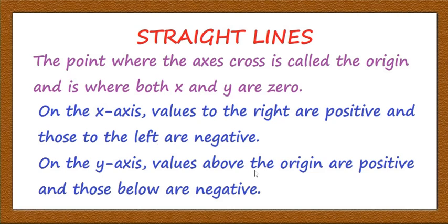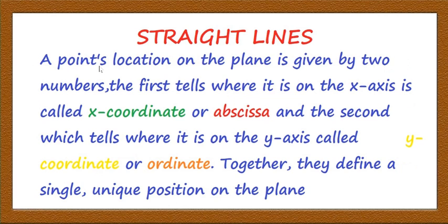On the x-axis, values to the right of the origin are positive and those to the left are negative. Similarly, on the y-axis, values above the origin are positive and those below are negative. A point's location on the plane is given by two numbers: the first number tells where it is on the x-axis and is called the x-coordinate or abscissa, and the second number tells where it is on the y-axis and is called the y-coordinate or ordinate. Any point on the plane will have an ordered pair of real numbers (x, y), in which x is called the abscissa and y is called the ordinate, and together they define a single unique position on the plane.